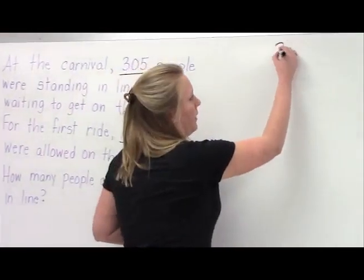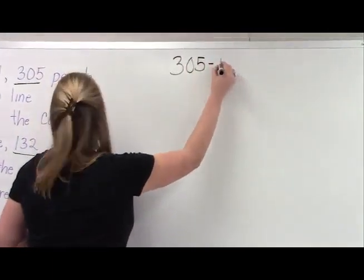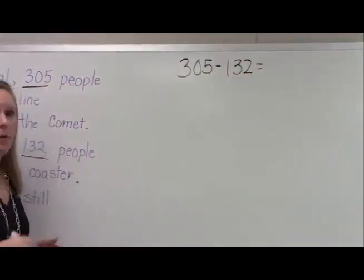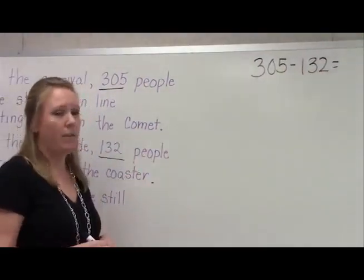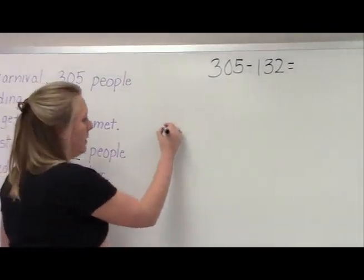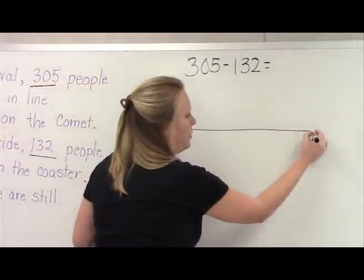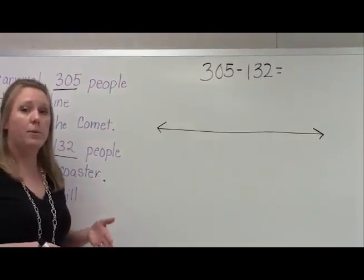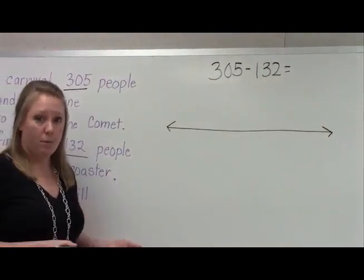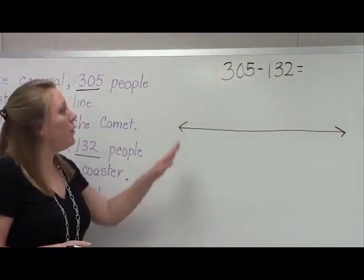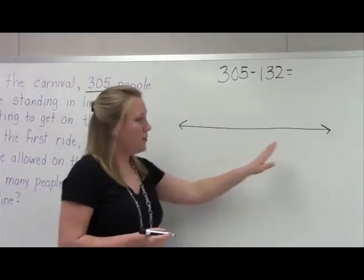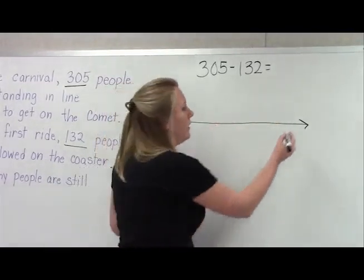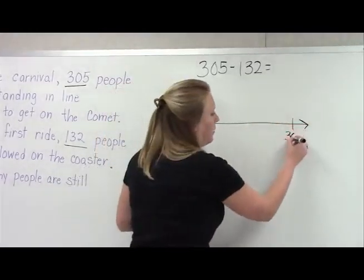So I'm going to write my equation: 305 minus 132. Now I'm going to show you the open number line in order to solve this equation. I'm going to start by just drawing a number line. It's an open number line because there are no numbers yet. Students get to decide what numbers to put on the number line. We're going to start with 305, and we're actually going to start on this side of the number line because we're going to be subtracting and hopping backwards. So I'm going to label this with 305.